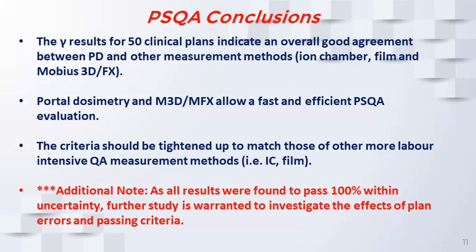In conclusion, we compared portal dosimetry with many measurement methods and found great overall agreement — results were close to around 100% within some amount of uncertainty. This means we can start to look at tightening up and favoring the quicker measurement methods versus the longer, more labor-intensive ones like film and ion chamber. With these results we can begin to match and streamline the workflow.